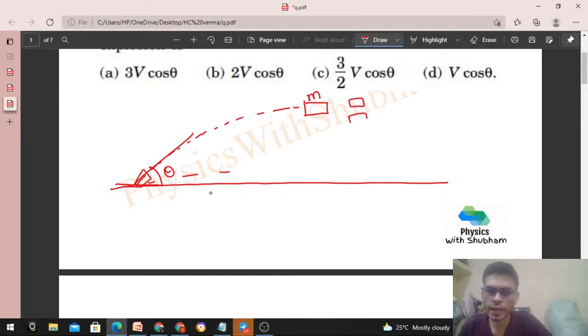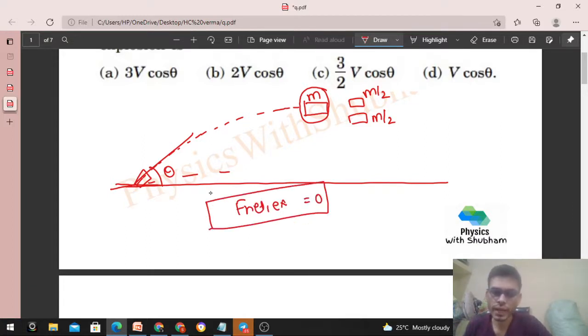So that is M/2 and M/2, something like this. So if I say, what is the net external force on this bullet? Can I say that net external force on the bullet is zero? Of course not.